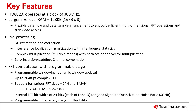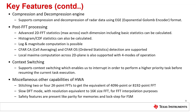With respect to FFT computation, it supports 2048-point complex FFTs of various sizes including 2^N, 3×2^N, and 2D FFT. The internal FFT bit width is maintained at 24 bits for good signal-to-quantization noise ratio. Hardware Accelerator 2.0 also supports compression and decompression of radar data using exponential Golomb encoder format with a dedicated engine. In the post-FFT processing part, it supports histogram or cumulative distribution function statistics along with 2D statistics. Various types of CFAR along with local maxima computation are also supported. Other capabilities include FFT stitching, slow DFT mode, and safety features which include parity for memories and lockstep for finite state machines.